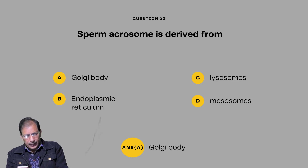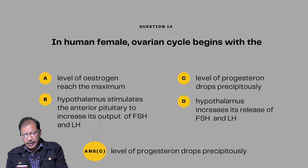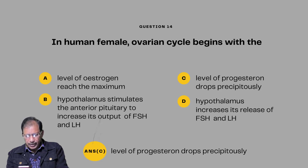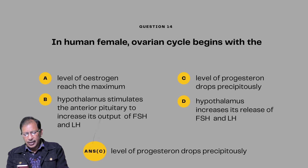Question number fourteen: In human female, the ovarian cycle begins with — A: level of oestrogen reaching maximum; B: hypothalamus stimulating anterior pituitary to increase output of FSH and LH; C: level of progesterone dropping precipitously; D: hypothalamus increasing its release of FSH and LH. Answer will be C — level of progesterone drops precipitously.